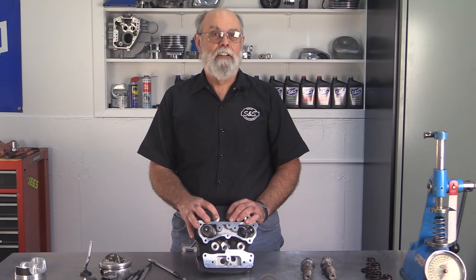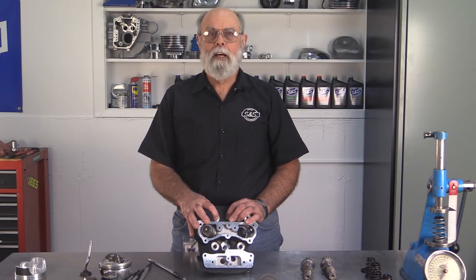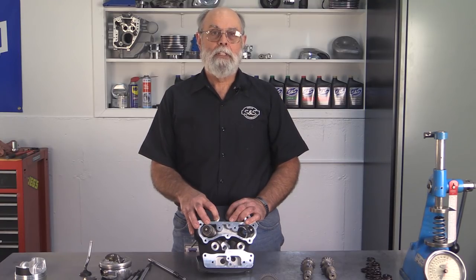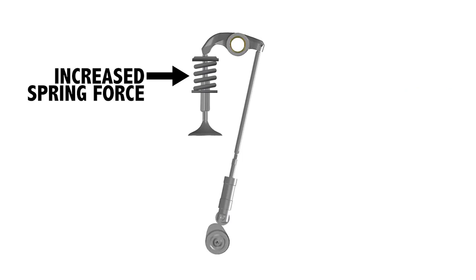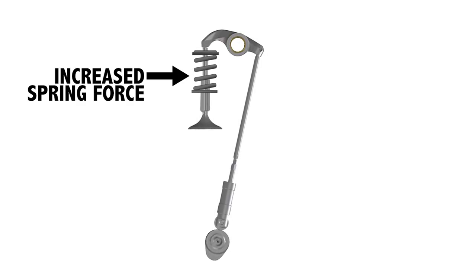If you plan on running stock valve springs, you need to select a camshaft that does not exceed the maximum lift for your springs. These are called bolt-in cams — a true bolt-in cam does not require any modifications or other components for installation; stock tappets, push rods, rocker arms, and valve springs can be reused, and cam timing is appropriate for a stock engine. Stock valve springs are perfectly fine for most street applications, but you can't exceed the stock rev limit. If you plan on operating the engine at higher RPM, you should install a set of performance valve springs, which apply more force and close the valve more quickly, ensuring the valve follows the cam lobe profile and closes fully at higher RPM.